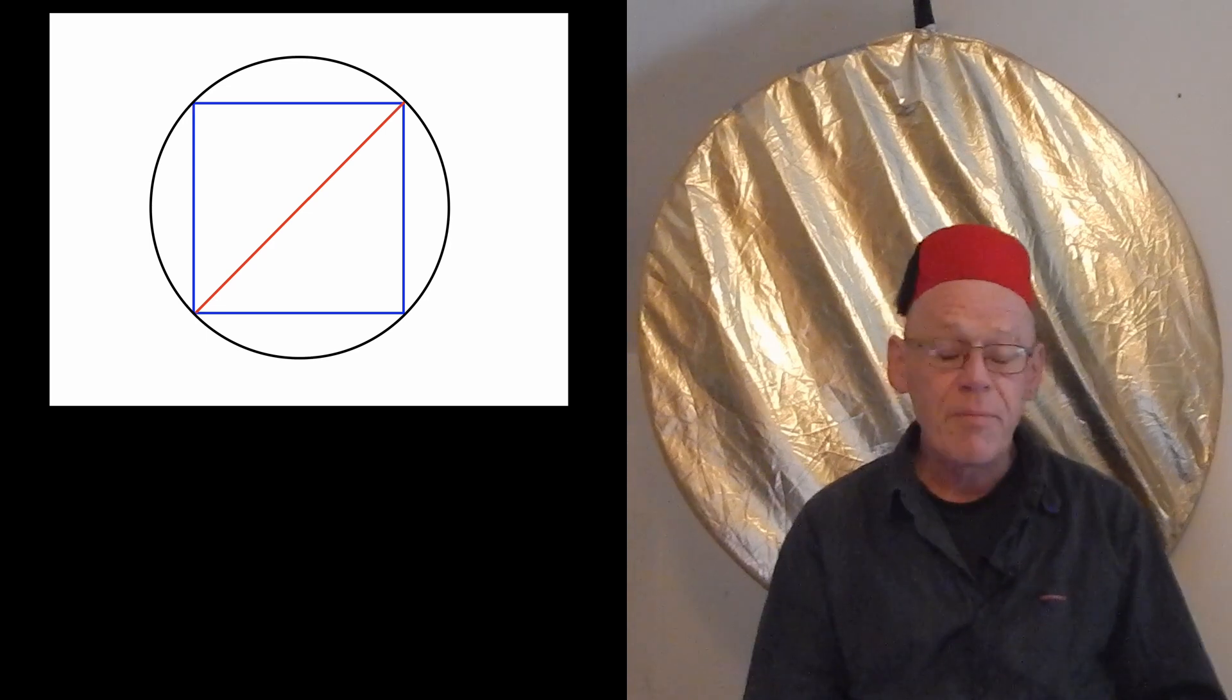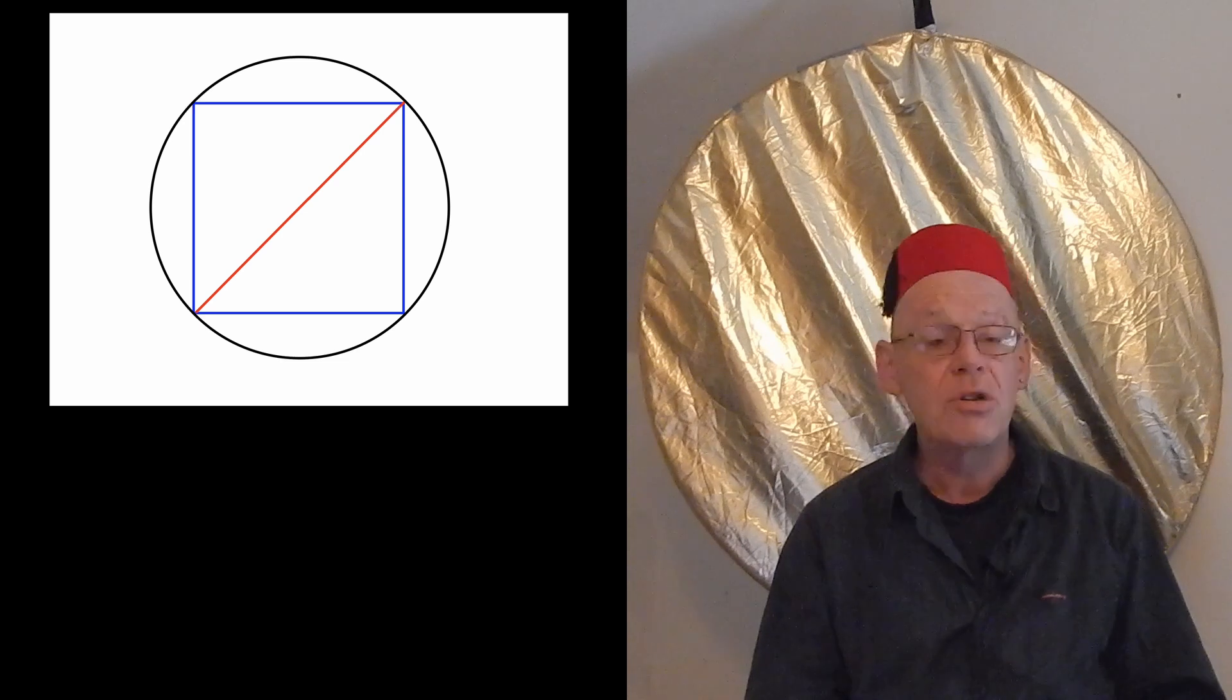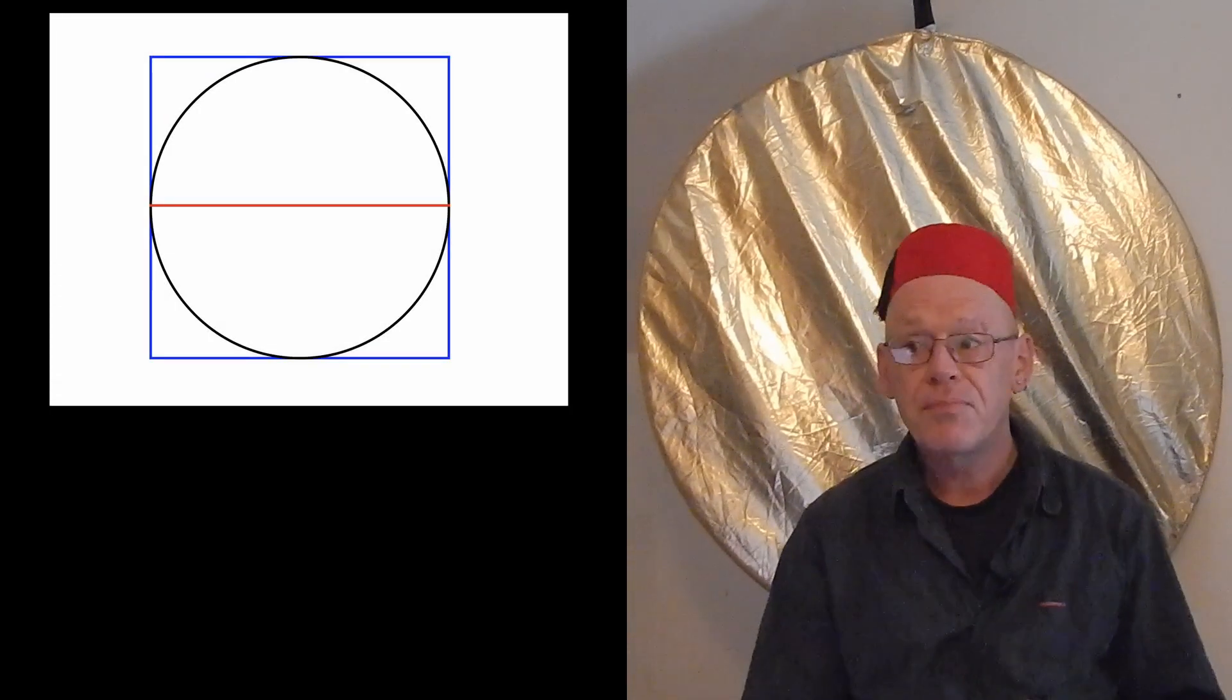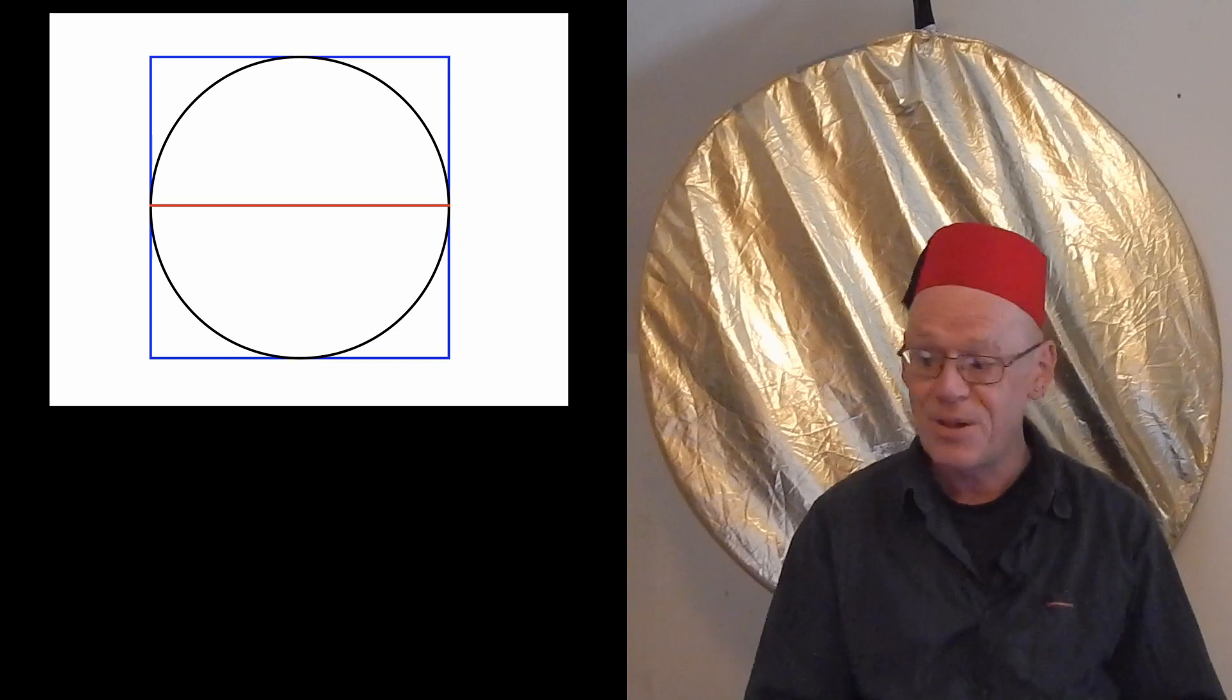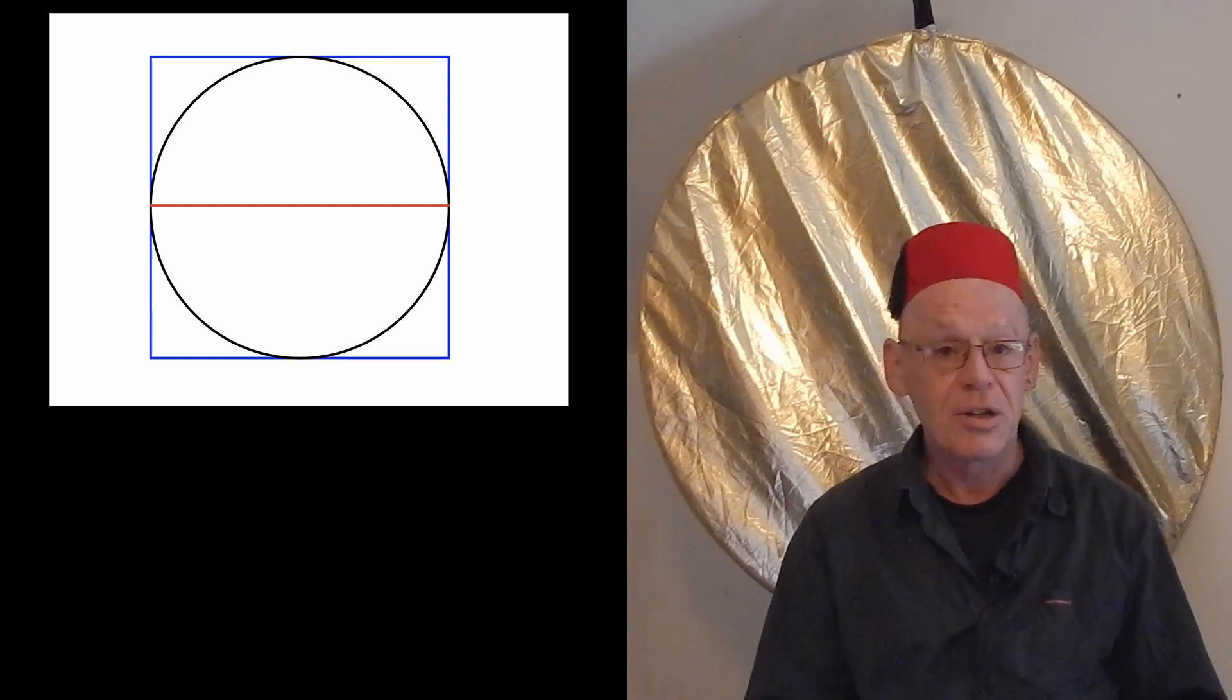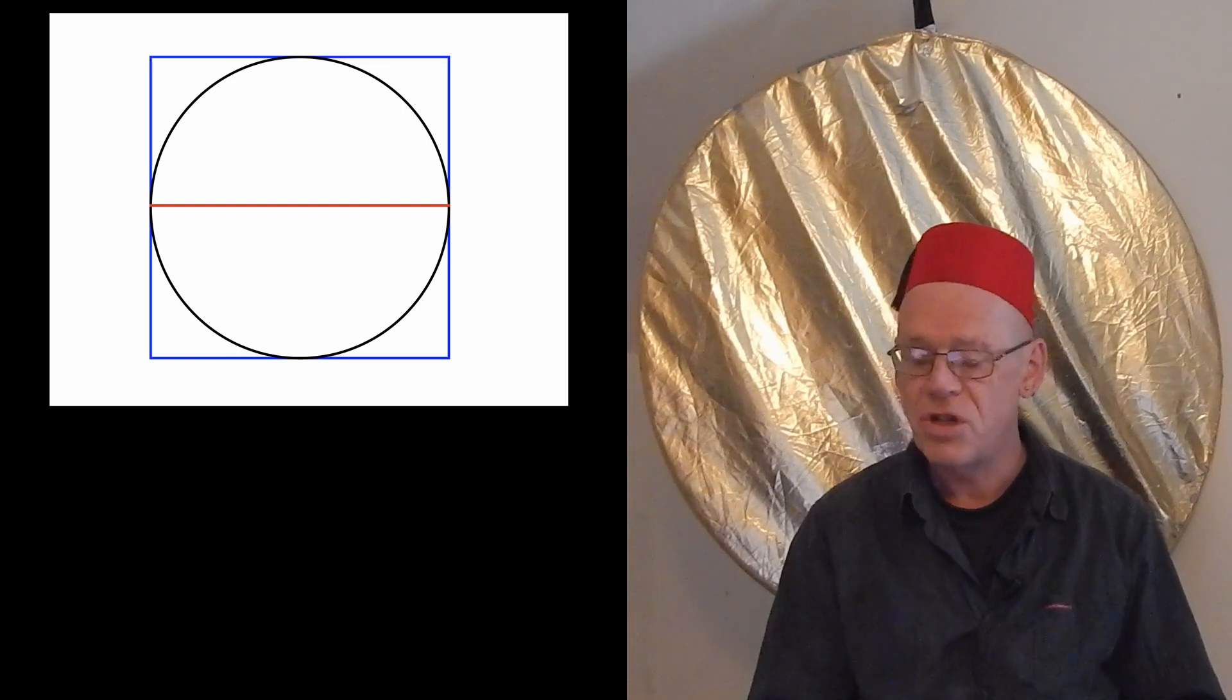You could inscribe very many shapes inside the circle, and you could do this slightly differently. You could inscribe the square around the circle. Greeks like doing lots of things. And then you find that the red line, which belongs to both of them, now doesn't touch a corner of the square but touches the middle of an edge.